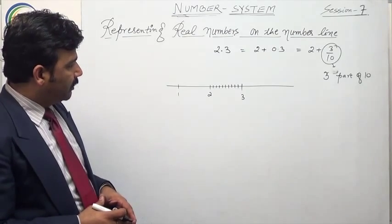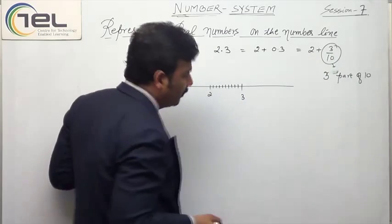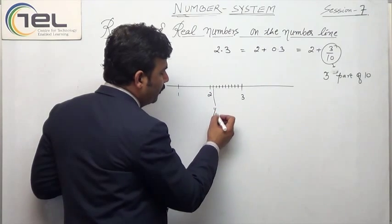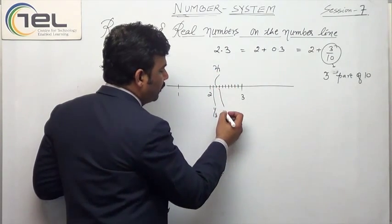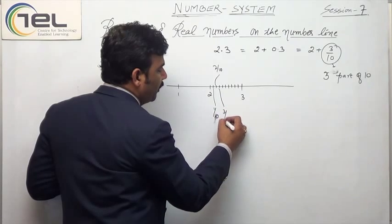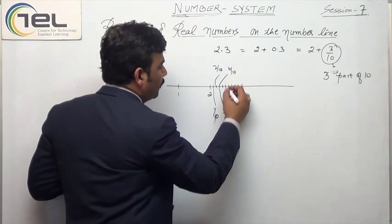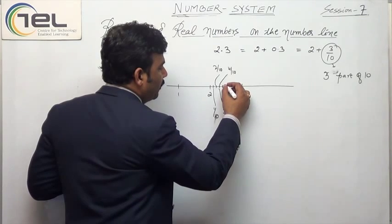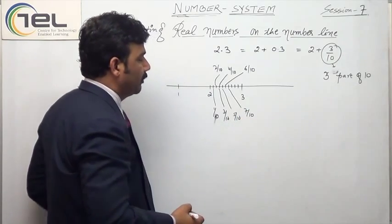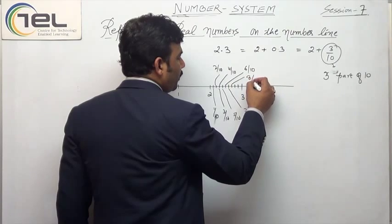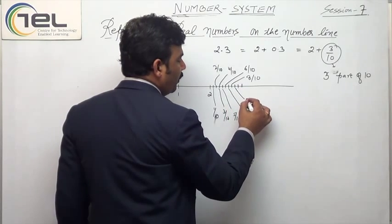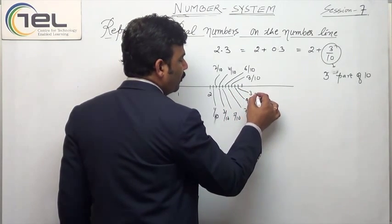What is happening here is 3 by 10. Out of these parts, this is the first part — 1 by 10. This is 2 by 10. This is 3 by 10. This is 4 by 10. This is 5 by 10. This is 6 by 10. This is 7 by 10. This is 8 by 10. And this comes to be 9 by 10, and then 3, or 10 by 10.